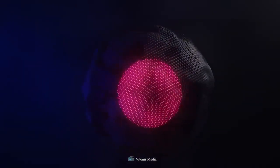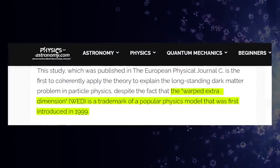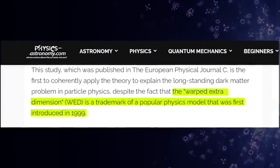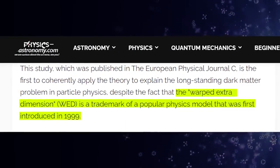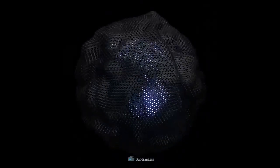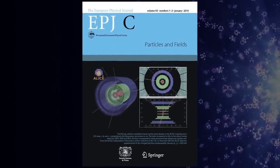The latest research suggests that dark matter can be explained by a particle that communicates with the fifth dimension. The Warped Extra Dimension, or WED, is a trademark of the popular physics model that was introduced for the first time in 1999. The idea has never before been applied to the age-old dark matter conundrum in particle physics until now, when it was published in the European Physical Journal C.